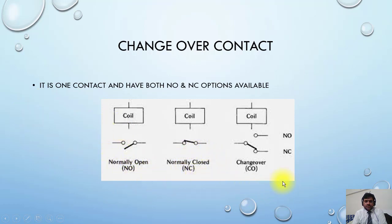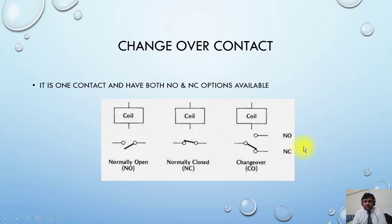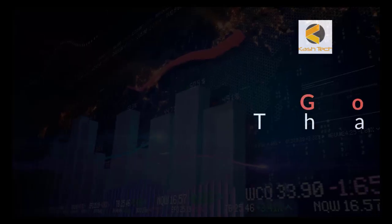This is the normally closed contact, and this is the changeover — it changes its position from NC to NO when the coil operates. This is the example of a changeover contact; you will find this contact in the drawing as well, so just keep that in mind. Thank you.